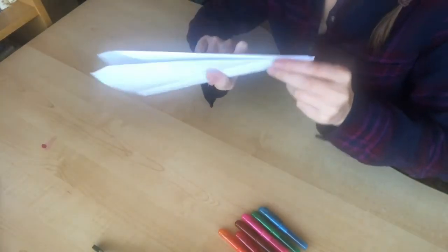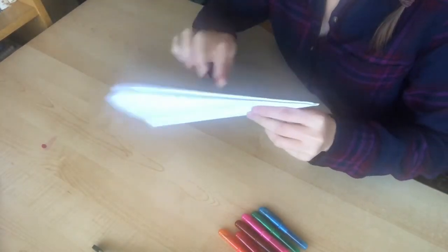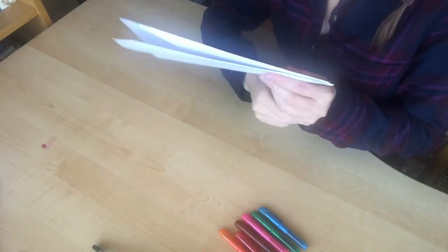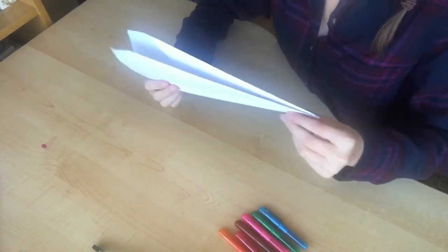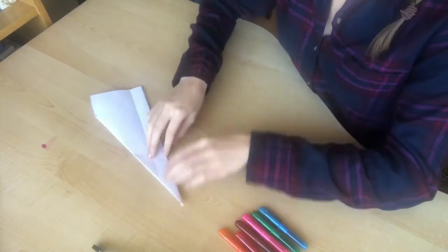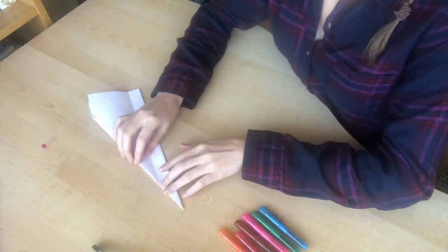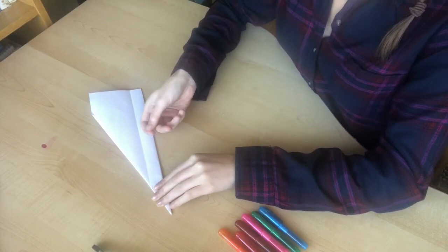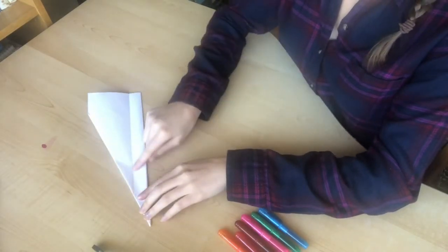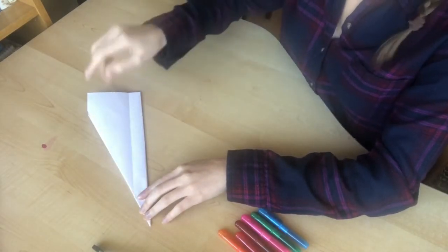Now it's time for the most important part of the aeroplane. What do you think it is? Yes, it's the wings! So we're going to leave a bit of space to hold the aeroplane and we're going to fold along this line to make a wing.